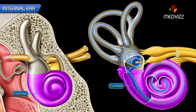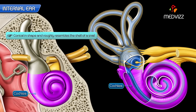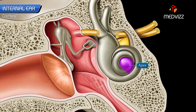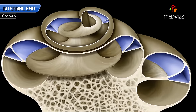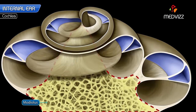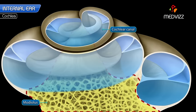The cochlea is conical in shape and roughly resembles the shell of a snail. Its apex or cupula is directed laterally towards the medial wall of the tympanic cavity. Its base is directed medially towards the bottom of the internal acoustic meatus. It consists of a modiolus and a bony cochlear canal.